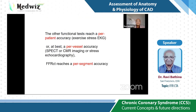Another interesting point: other functional tests achieve only per-patient accuracy — for example, stress EKG — or at best per-vessel accuracy, like SPECT, CMR, or stress echo. Whereas FFRCT achieves per-segment accuracy — at each coronary segment, we can determine if the lesion is functionally significant or not.